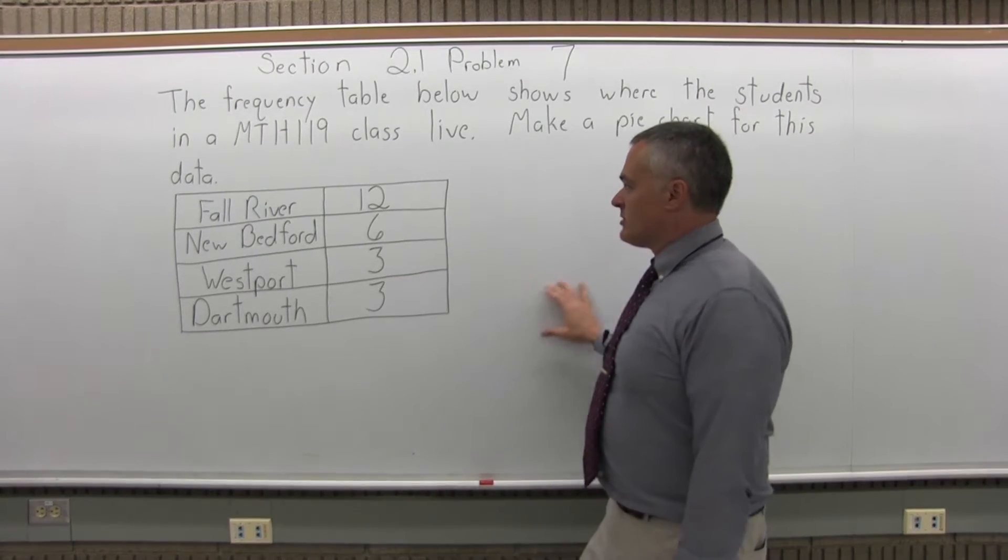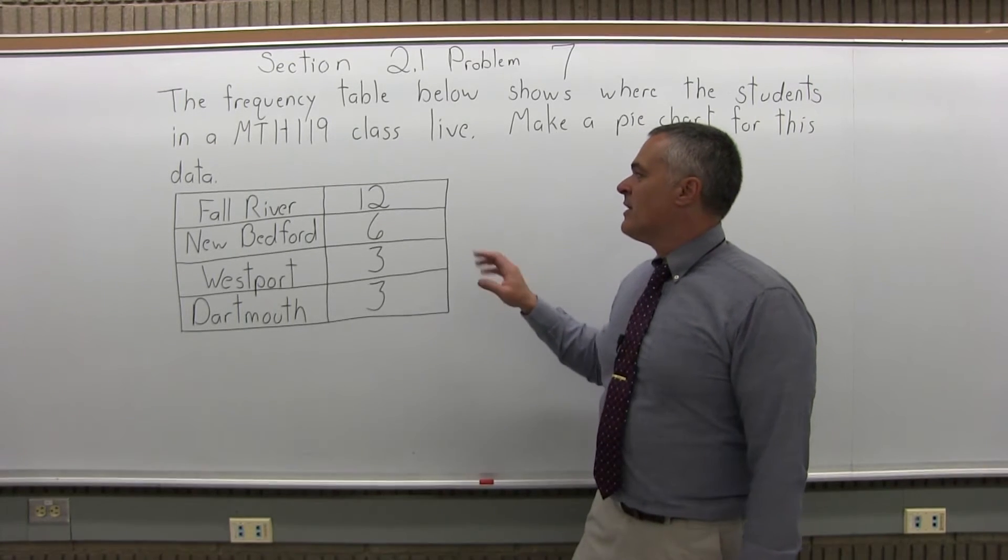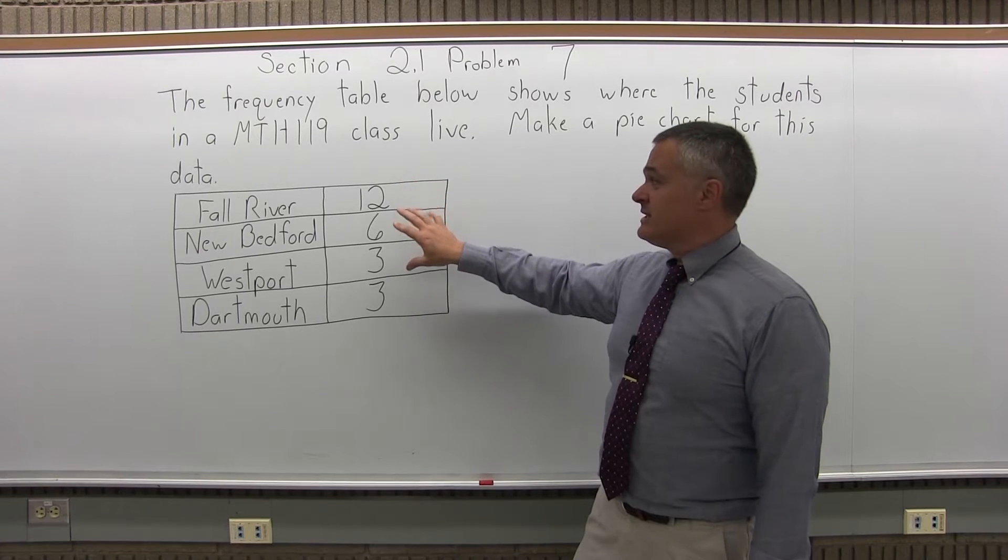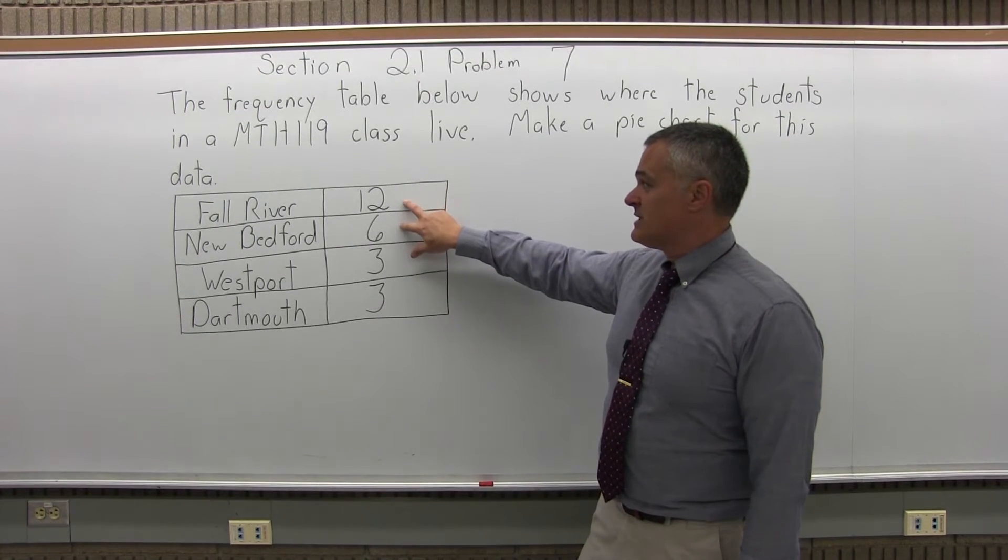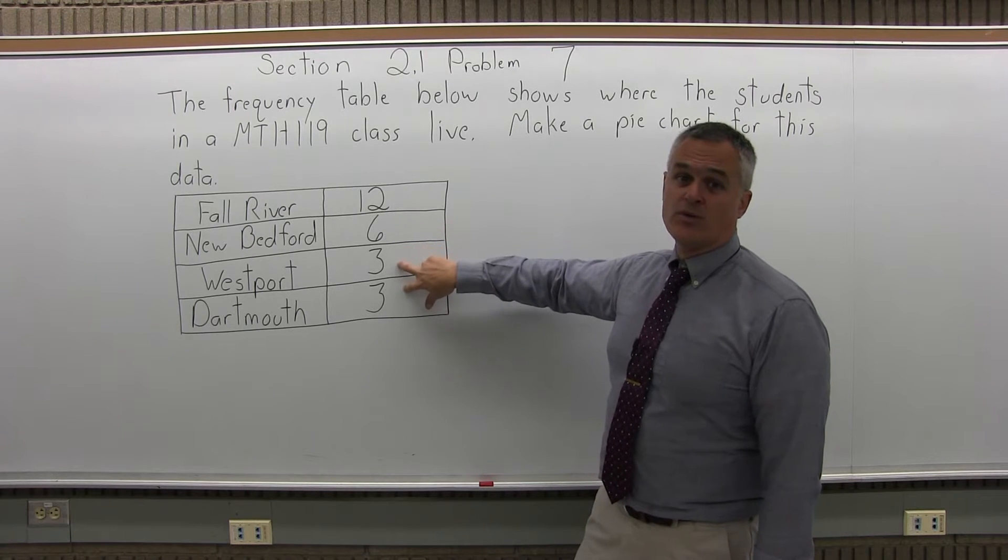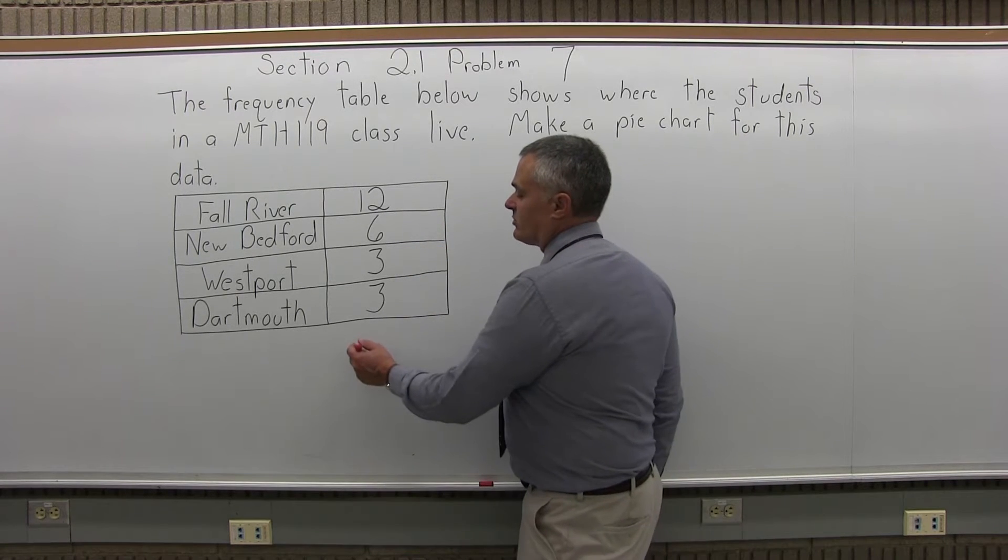So, we're going to make a pie chart or a circle graph, and what we want to figure out first of all is how many students altogether are in this class. So, if we add it up, 12 and 6 is 18, 18 plus 3 is 21, 21 and 3 more is 24. So, we have a total of 24 students.